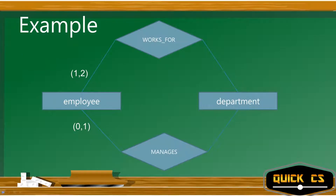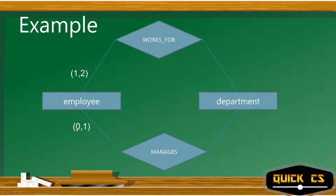Let's look at an example. There are two entity sets: employee and department. 'Employee works for department' is one relationship, and 'employee manages department' is another. The notation '1,2' means an employee has to work for at least one department and can work for a maximum of two departments. '0,1' means an employee doesn't have to manage any department, but can manage at most one. That's the whole concept — the rest is just terminology.